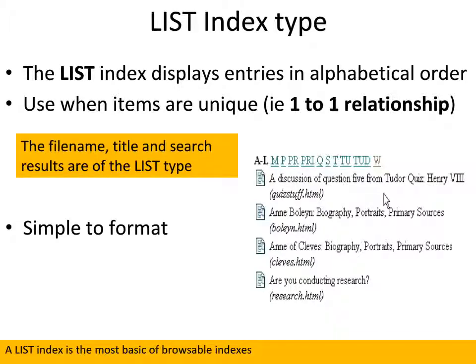A title type index doesn't necessarily have to be based on title. For example, if you had an accession number or some sort of unique identifier, you could create an index based on that which lists all the records in the collection. By default it's a list of the titles, and if you have more than 20 items in the index, it starts to break them up into partitions which appear at the top of the index in a horizontal list.